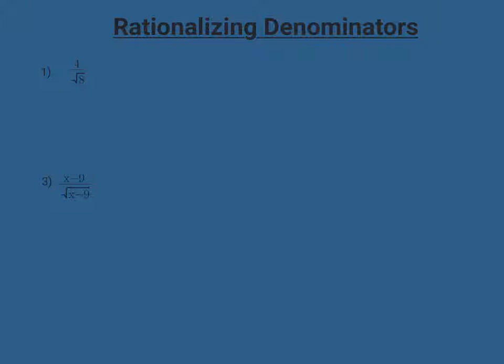If you can turn to page 7 of your packet, we're going to talk about rationalizing denominators. Rationalizing a denominator just means you want to rewrite the denominator so it only contains rational numbers — basically, you want to get rid of the radicals that are in the denominator of the fraction.